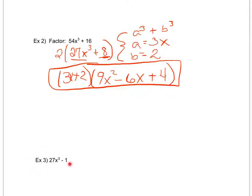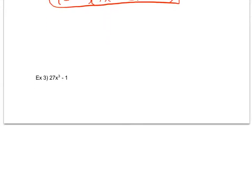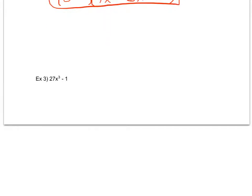If you wanted to try example 3, example 3 would be a good one for you to pause the video and try. All right, now that you've had a chance to try one, let's go over it. So I check for a GCF, and I don't have one. I notice that this is in the form a cubed minus b cubed, because this expression is the same thing as saying 3x cubed minus 1 cubed. Therefore, my a is 3x, and my b is 1.